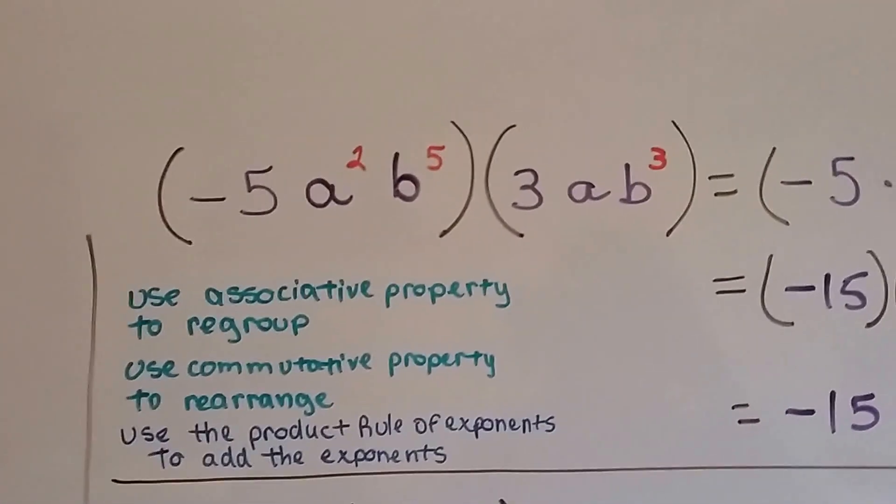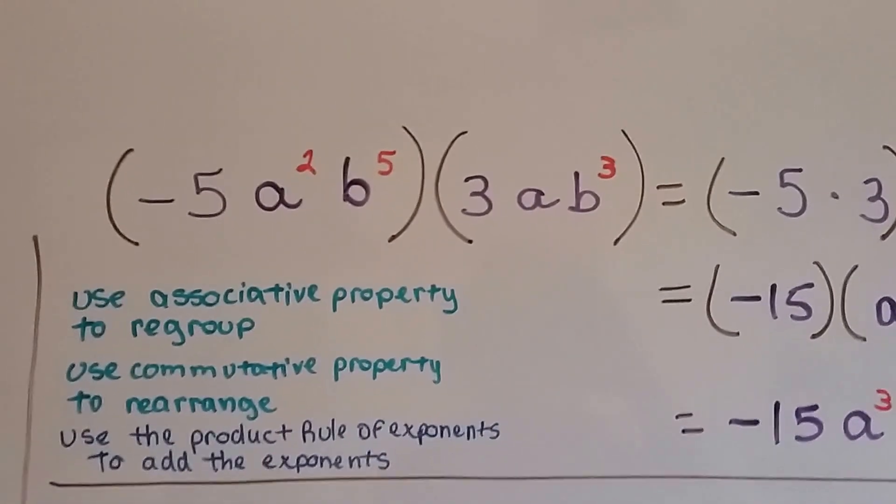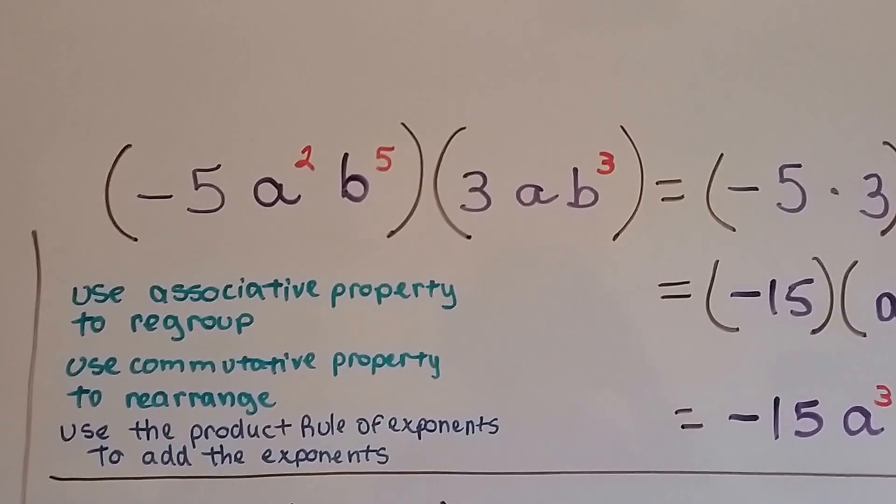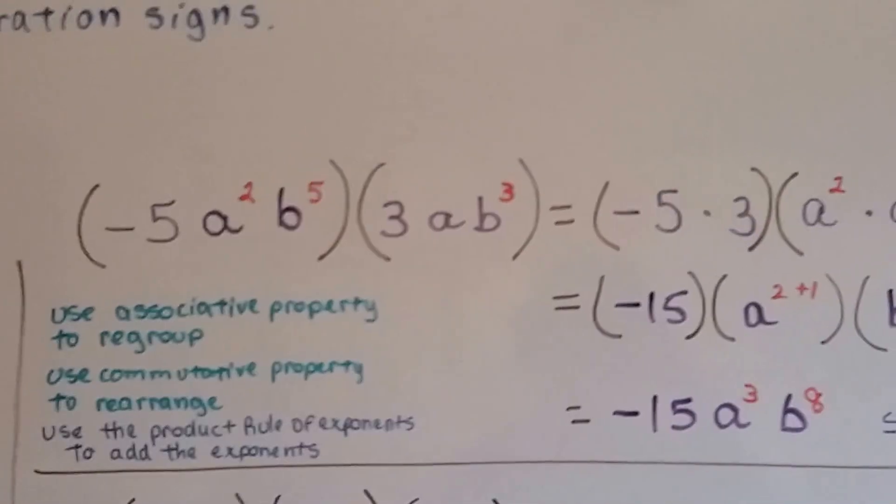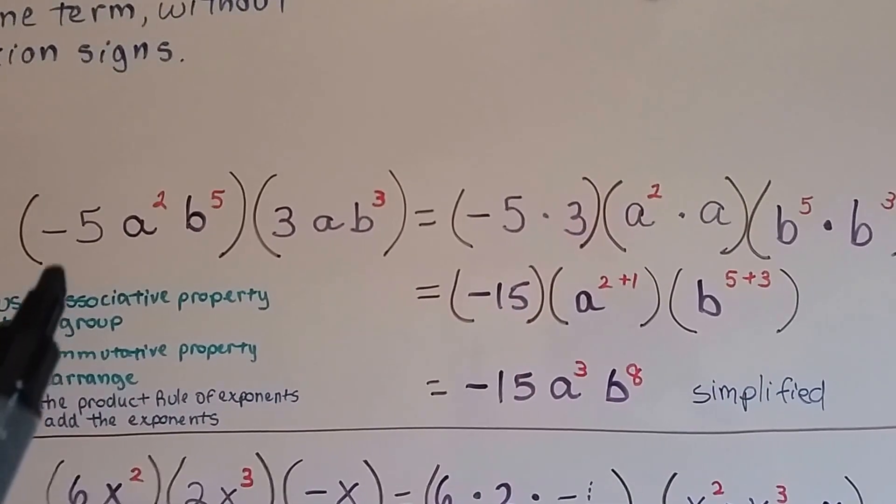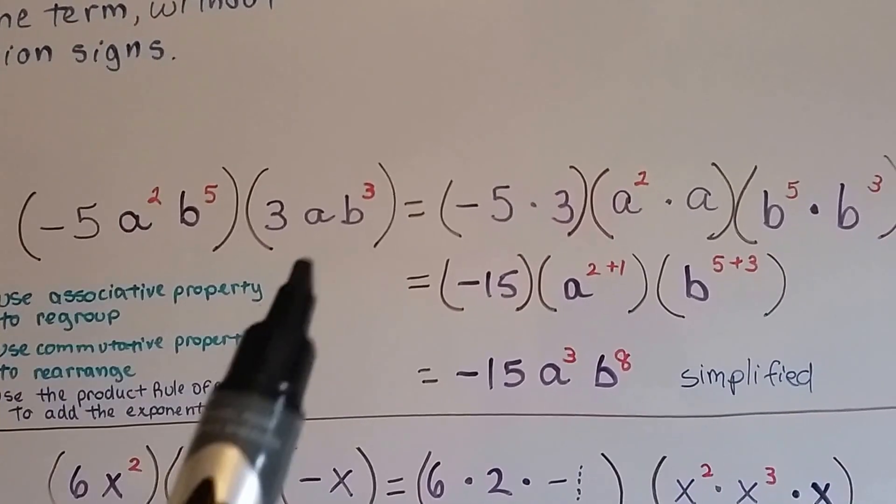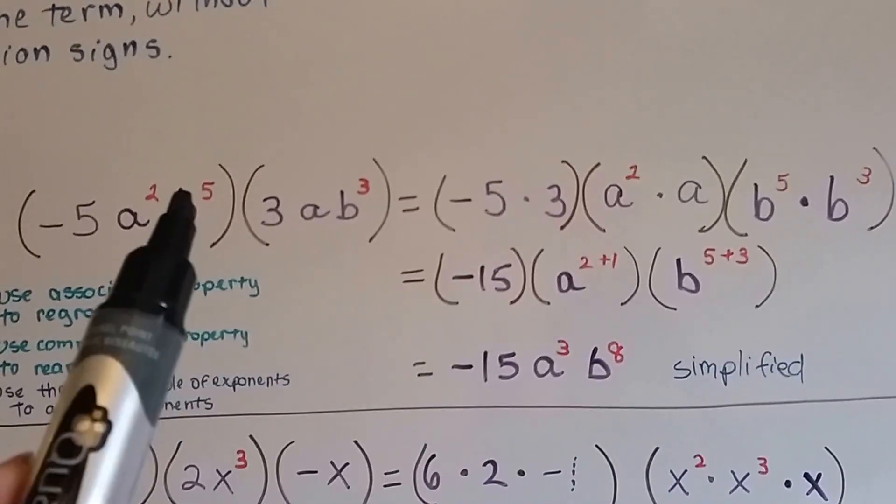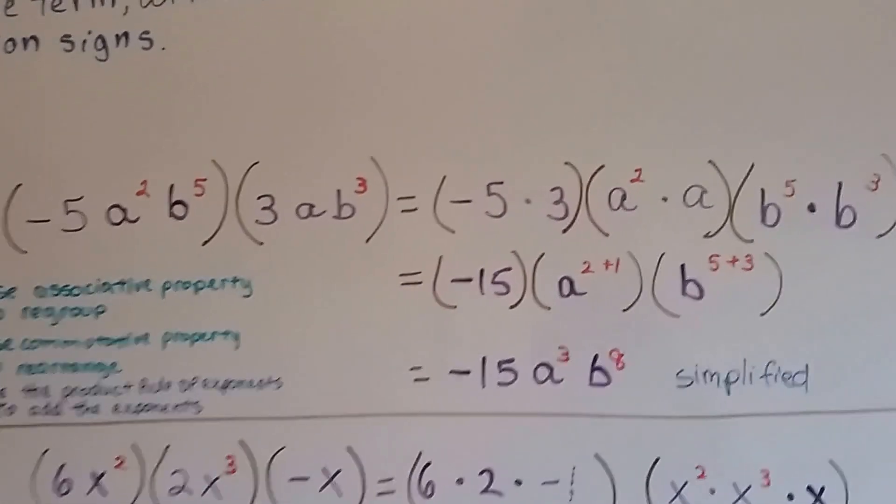Let's do an even harder one. We've got negative 5a to the second power, b to the fifth power, times 3ab to the third power. So, we're going to use the associative property to regroup, the commutative property to rearrange. So we pull out all the numbers. We've got a negative 5 and a 3. We pull them out. We've got an a squared and an a. We pull them out by themselves. And we've got the b to the fifth power and b to the third power and we pull them out by themselves.